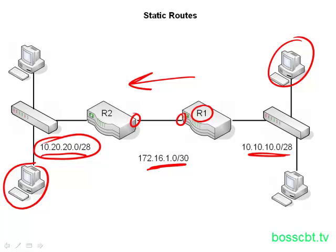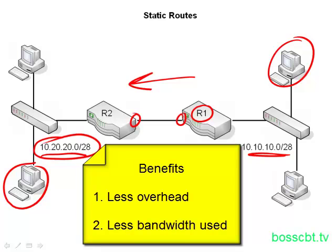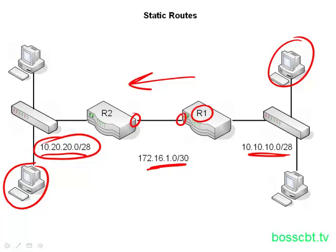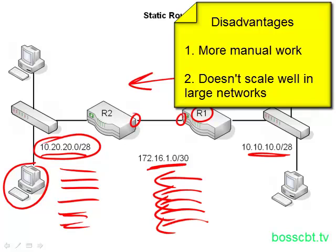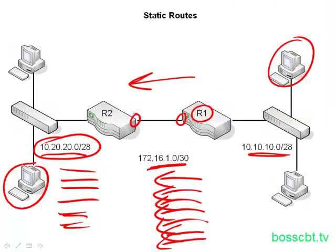There are some benefits to static routes. Because we're not using a routing protocol, neither router is processing all the messages that R1 and R2 would send to each other, so they're doing less work and saving resources. Also, because there are no routing protocol messages going between the two, we're using less bandwidth. However, the disadvantage is if we had five more subnets over here, we'd have to configure five more static routes on router one. It doesn't scale very well — there's always new manual work to do, and in a very large network, it just doesn't work out.